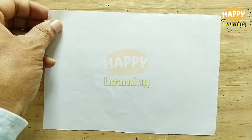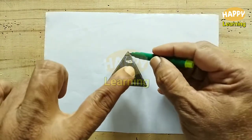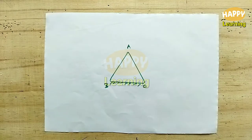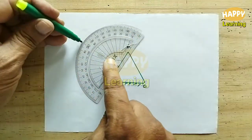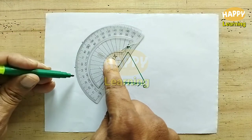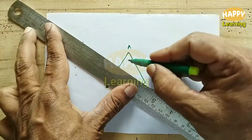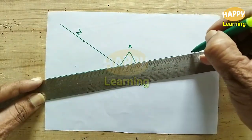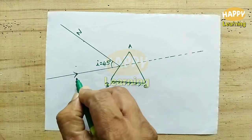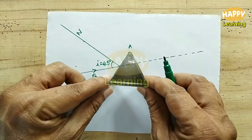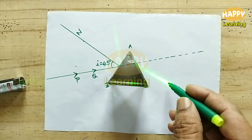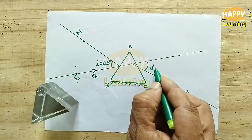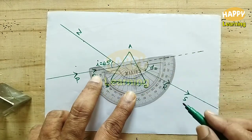Repeat the same process for another angle of incidence. The triangle ABC represents the prism. Note the normal and incident ray positions — the angle of incidence here is 45 degrees. The incident ray is named PQ. Project the laser beam and note the emergent ray RS. The angle of deviation here is 38 degrees.